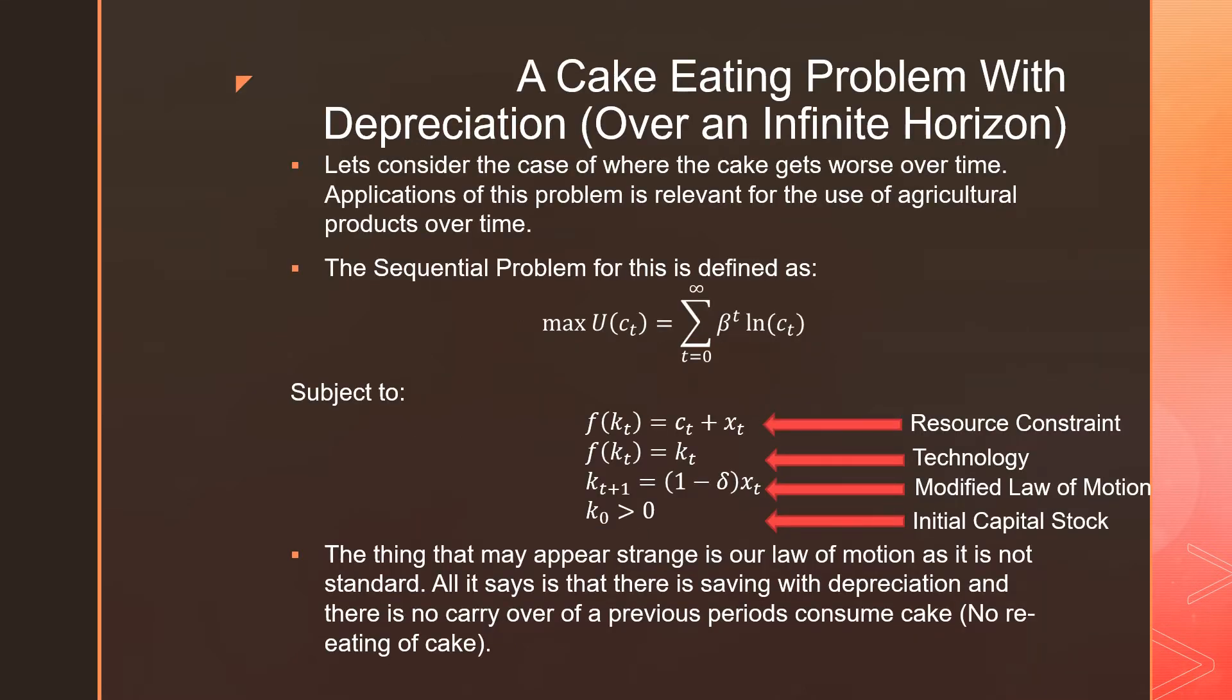So let's consider the case where the cake gets worse over time. Applications of this problem is relevant for the use of agricultural products over time. For example, let's say you're dealing with a restaurant or a franchise of restaurants that carry vegetables or something like that. They get worse over time. That's just one application that I can think about.